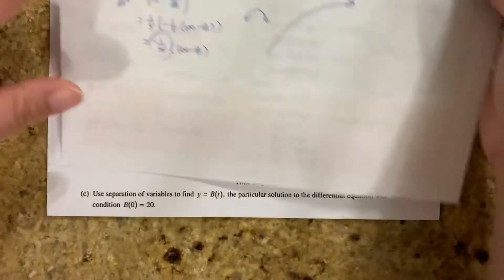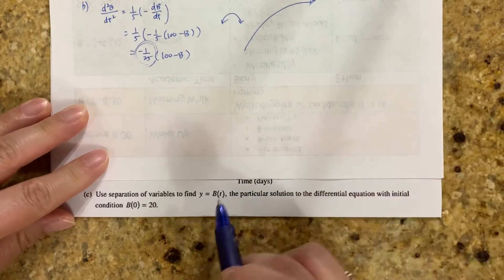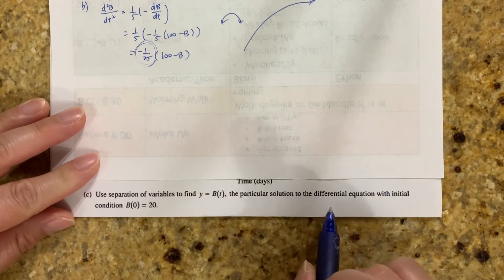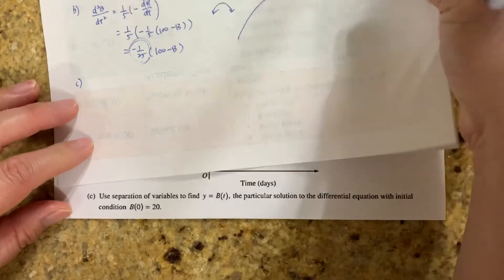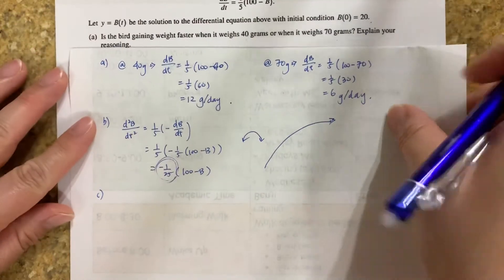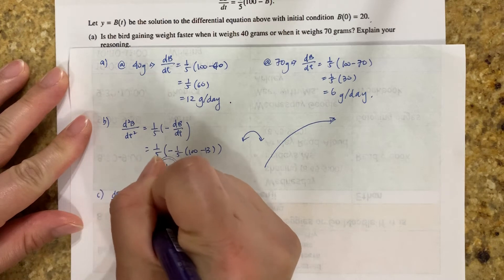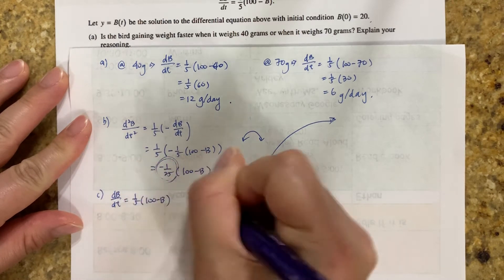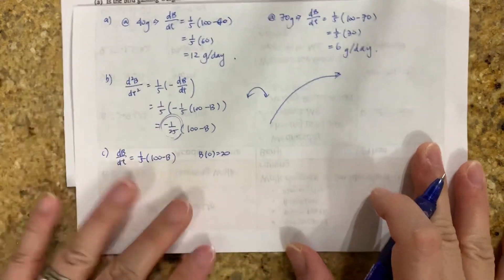Lastly, use the separation of variables to find y equals b of t, the particular solution to the differential equation with the initial condition b of 0 equals 20. So we need to take our db over dt equals 1/5 times 100 minus b. And don't forget, b of 0 equals 20. And now we need to solve for the equation.